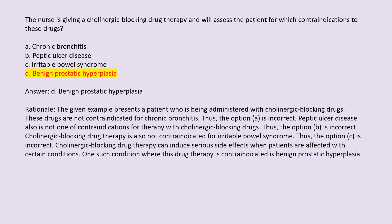Answer: D. Benign prostatic hyperplasia. Rationale: Cholinergic blocking drugs are not contraindicated for chronic bronchitis, peptic ulcer disease, or irritable bowel syndrome. Cholinergic blocking drug therapy can induce serious side effects when patients are affected with certain conditions, and one such condition where this drug therapy is contraindicated is benign prostatic hyperplasia.